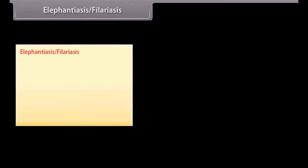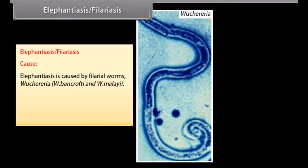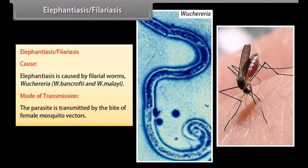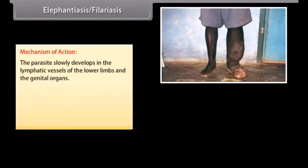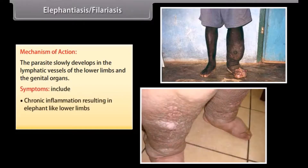Elephantiasis, or filariasis, is caused by filarial worms Wuchereria bancrofti. The parasite is transmitted by the bite of female mosquito vectors. It slowly develops in the lymphatic vessels of the lower limbs and genital organs. Symptoms include chronic inflammation resulting in elephant-like lower limbs and gross deformities of genital organs.